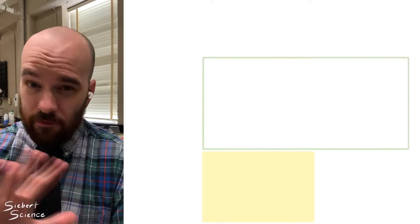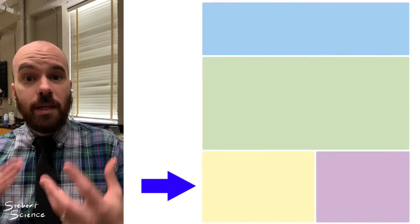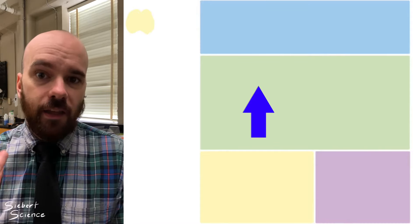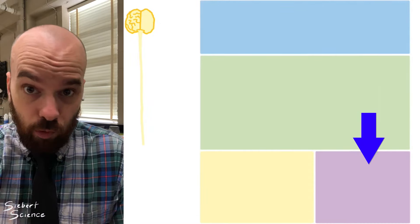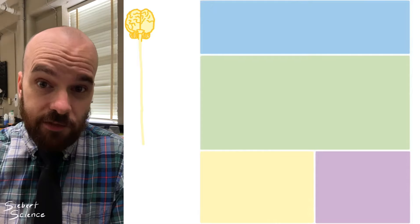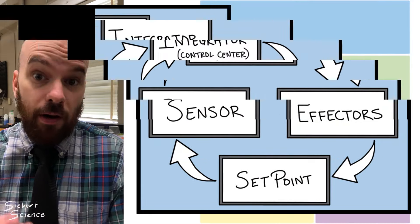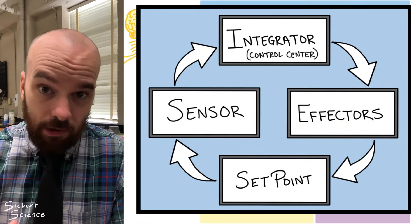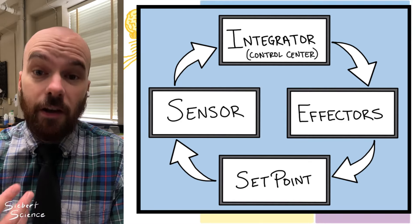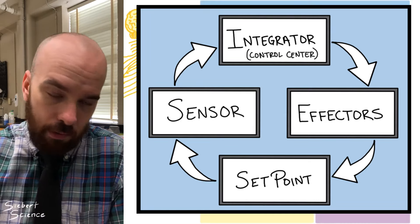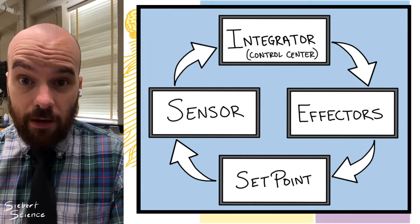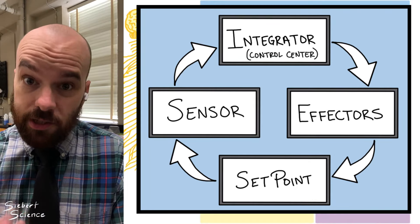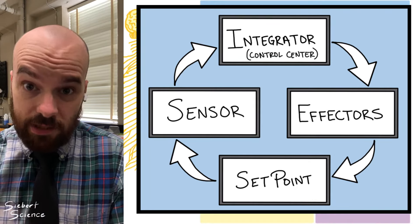My favorite way to think about the divisions of the nervous system is to think of them in terms of information coming in, us processing that information in some way, and then doing something with that information. In my homeostasis video, I took us through a similar process where we had a sensor, an integrator where we process some information, and then an effector where we made some change to bring a variable back to the set point. During a homeostatic negative feedback loop like that, we use all of these divisions of the nervous system as part of the process.